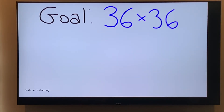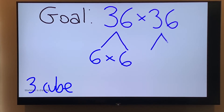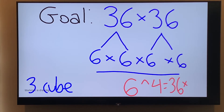So to explain this trick, let's start off with a simple goal: 36 times 36. We want a 3-cube solution. Now how are we going to get that? 36 is equal to 6 times 6, and that other 36 is equal to 6 times 6 as well. And since we're multiplying them together, we can write it as that — that's 4 sixes being multiplied together, so we can write that as 6 to the power of 4. That would be our solution, equal to 36 times 36.